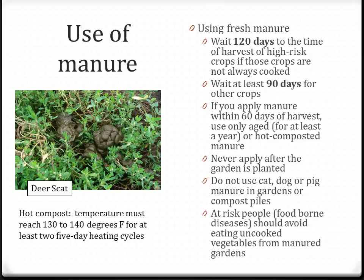Manure is still a valuable nutritional input, but a few guidelines should be followed for its safe use. When using fresh manure, wait at least 120 days before harvesting a high-risk crop — a low-growing crop with a high probability of intercepting a foodborne pathogen from water splash. For all other crops, wait at least 90 days before harvesting. If you apply manure within 60 days of harvest, use only aged (at least one year) or hot-composted manure. Never apply after the garden is planted. Do not use cat, dog, or pig manure in gardens or compost, as they are capable of carrying pathogens transferable to humans.